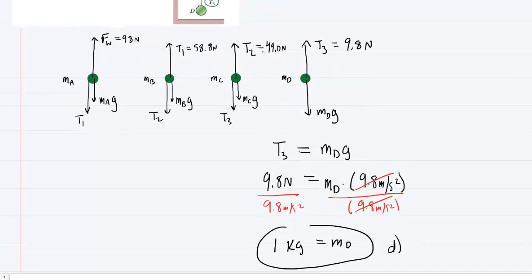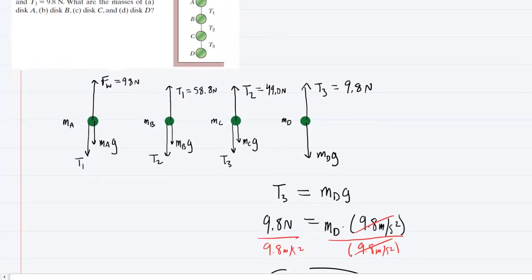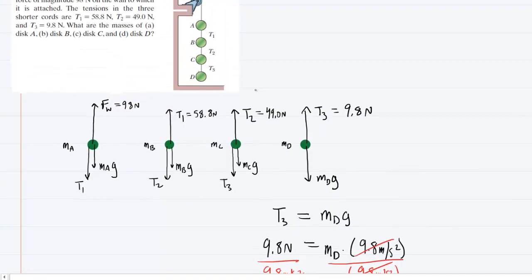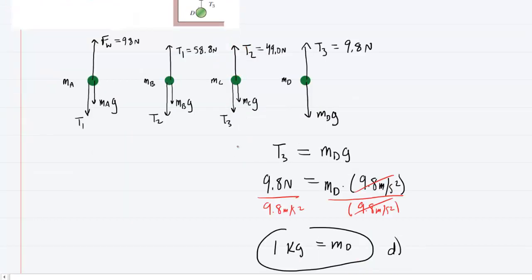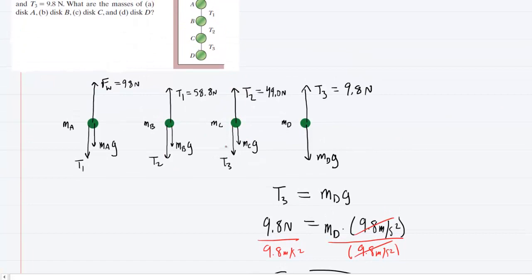We now work our way backwards. We'll look over at disk C. Look back at the diagram at disk C right here and you'll see that it is attached to two ropes, T2 and T3. So we know from that that in the free body diagram we're going to have T2 pulling up on disk C and T3 is pulling down on disk C. But we also have the gravitational force pulling down on disk C. So there are three forces in this case.